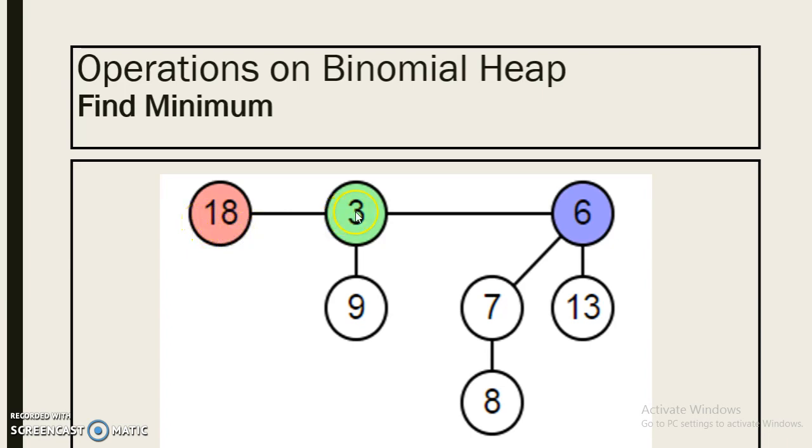And compare with its adjacent root node. From 18 and 3, 3 is minimum. And from 3 and 6, 3 is minimum. So here we get our minimum value 3.